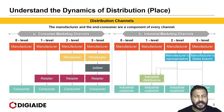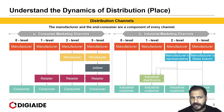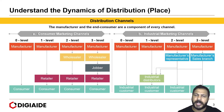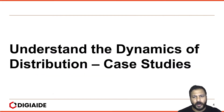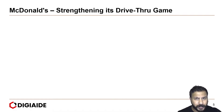There is also an industrial marketing channel which entails similar intermediaries such as a manufacturer representative or an industrial distributor. One thing is common in both cases: the manufacturer is at the beginning and the consumer is at the end. Let's move on to some case studies which will help us understand the dynamics of distribution better.